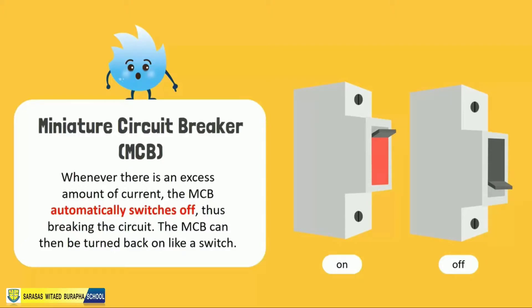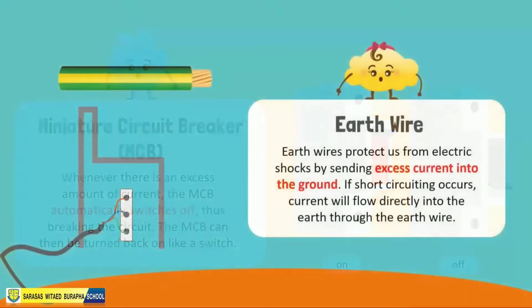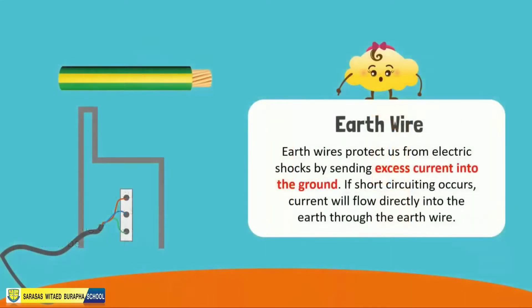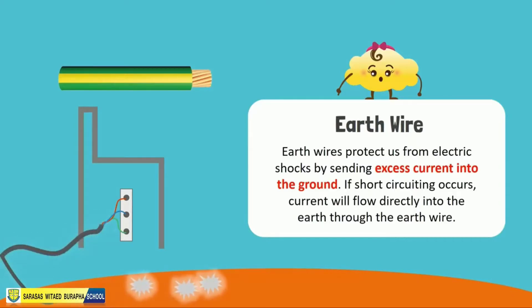Next are earth wires. Earth wires protect us from electric shocks by sending excess current into the ground. If short circuiting occurs in a device, current will flow directly into the earth through the earth wire, protecting the person who touches the faulty device.